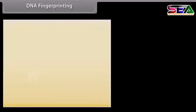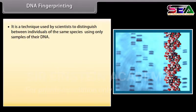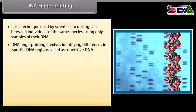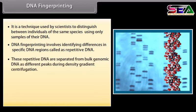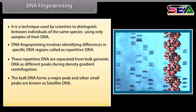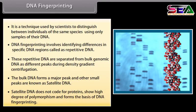DNA fingerprinting is a technique used by scientists to distinguish between individuals of the same species using only samples of their DNA. It involves identifying differences in specific DNA regions called repetitive DNA. These repetitive DNA sequences are separated from bulk genomic DNA as different peaks during density gradient centrifugation. The bulk DNA forms a major peak, and the other small peaks are known as satellite DNA, which does not code for proteins, shows a high degree of polymorphism, and forms the basis of DNA fingerprinting.